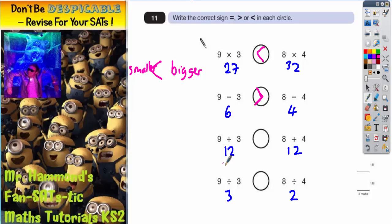And this one, 12 on the left and 12 on the right, so 12 and 12 are both the same. If they are both the same, that means they are equal. And if they are both equal, we have to use an equal sign. So that one is going to be an equal sign.